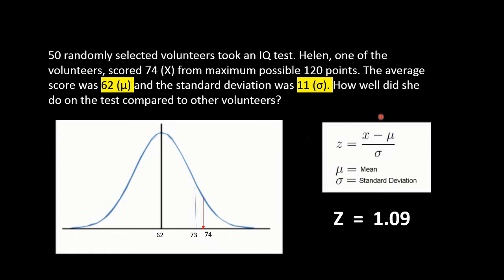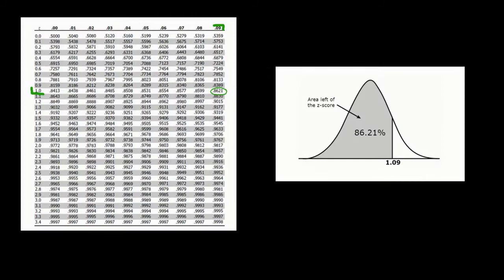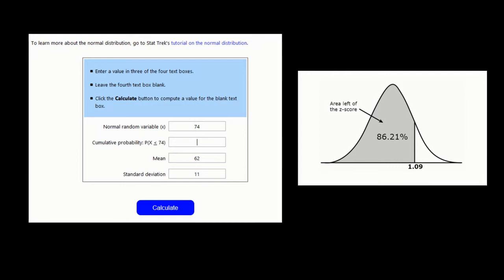We can change this into Z value, the same way we did before. Then we get the value equals 1.09. Then we can use the tables to know exactly this area, or we can use the calculators on the net and we can have the same value.